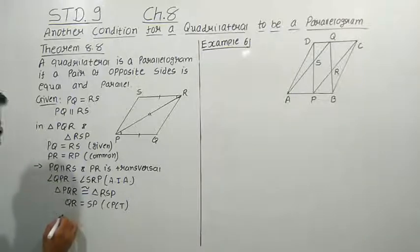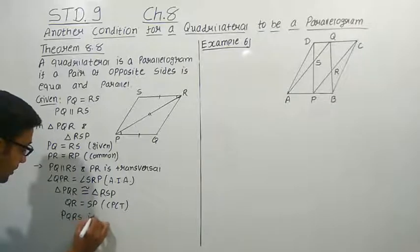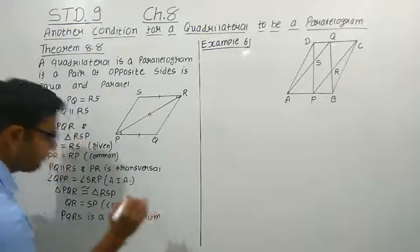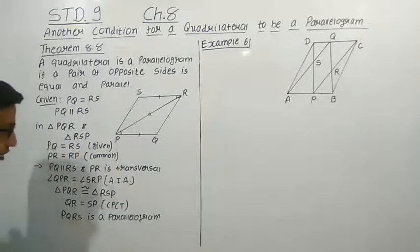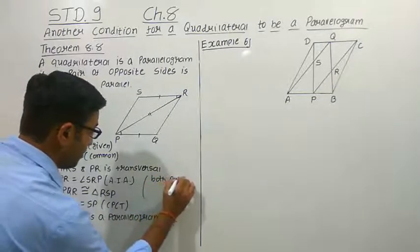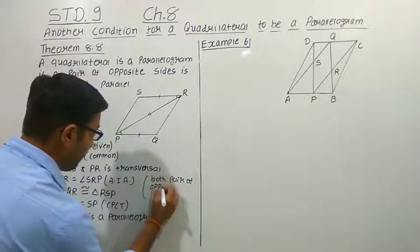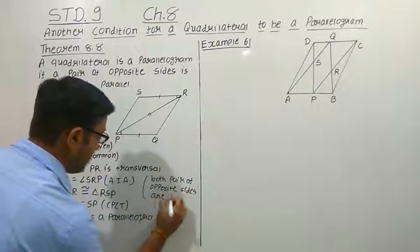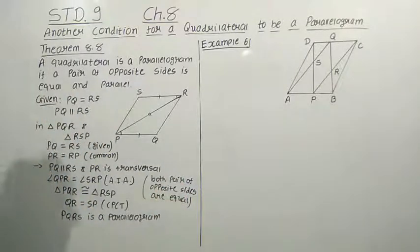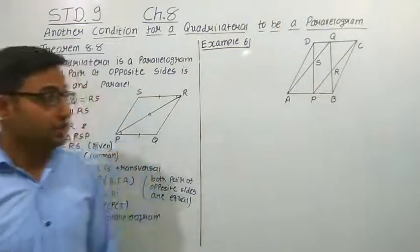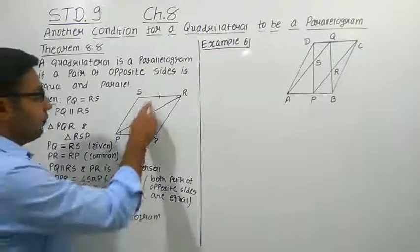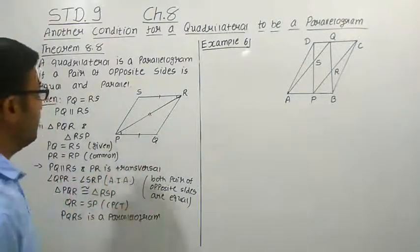Therefore, PQRS is a parallelogram, because both pairs of opposite sides are equal. So this is how we prove theorem 8.8. This is the least requirement condition: if in a quadrilateral only one pair of opposite sides is equal and parallel, then it is a parallelogram.